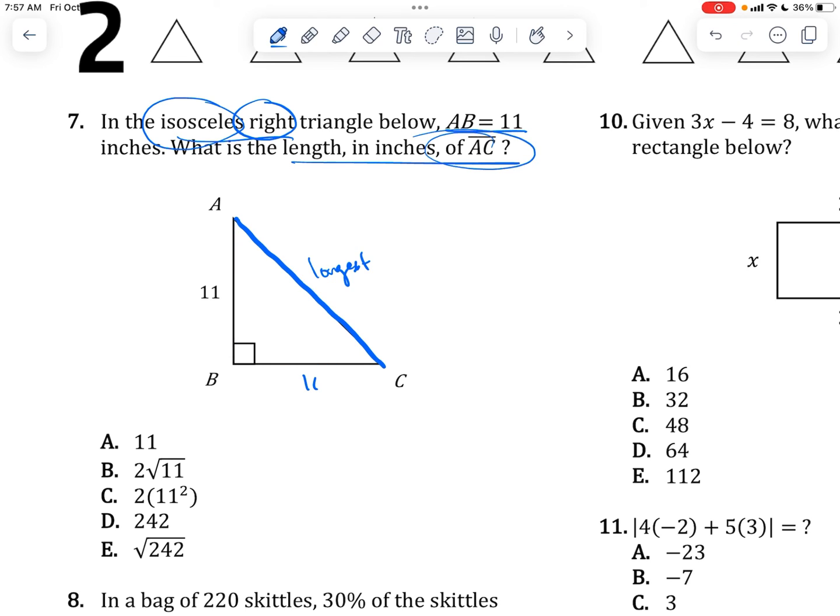So we're asked to find AC. AC is the longest. You can either use Pythagorean theorem. Just do A squared plus B squared equals C squared. In this case, this is A, this is B, and your longest is C. You can calculate it that way. Or you can just remember the fact that for a right isosceles triangle, if you have 1, 1 for side lengths, you would have square root of 2 for the... You basically just take the side length and multiply by square root of 2. And that is your answer for the hypotenuse.